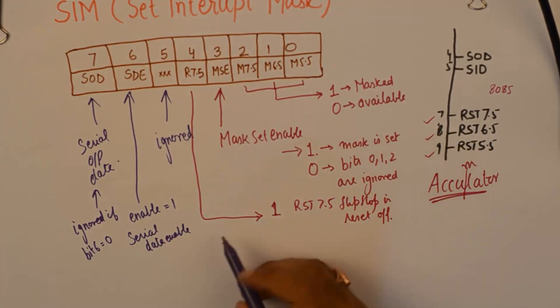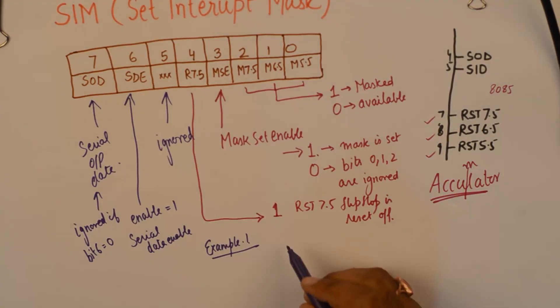Example number 1. We wish to mask RST 5.5 and 6.5 and we would rather keep the RST 7.5 available.